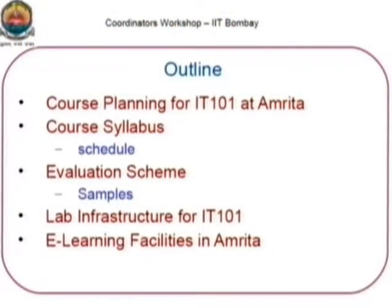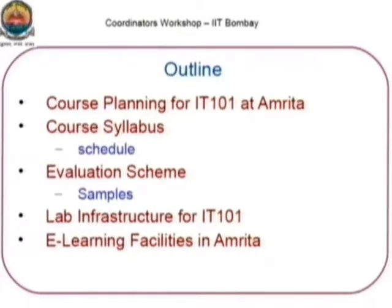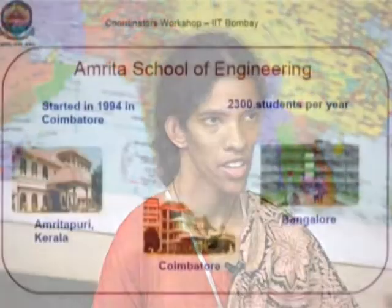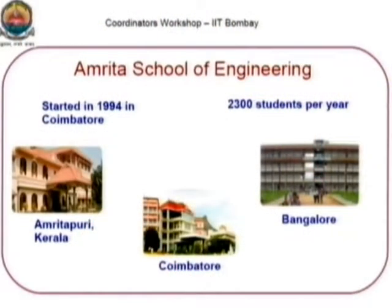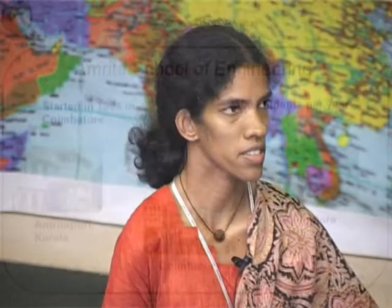Before I go, the reason I am stating this is we need to know the scale of how we are going to do it in Amrita. We have three campuses in the Amrita School of Engineering: one in Coimbatore in Tamil Nadu, one in Amritapuri in Kerala near Kollam, and the third one in Bangalore. In total, we are taking around 2300 first-years every year for engineering, spread across these three campuses. We have around 1000 students at least in the Coimbatore campus, which is the biggest campus.